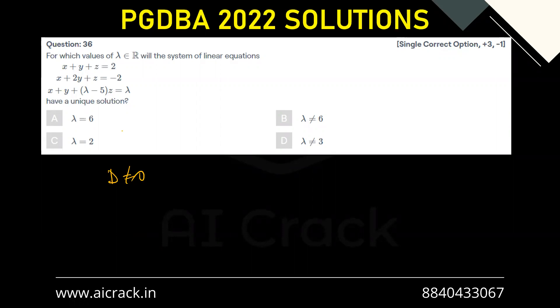So we'll find out a determinant for the coefficients. So that would be 1, 1, 1, 1, 2, 1, 1, 1, and lambda minus 5. So this is the determinant.